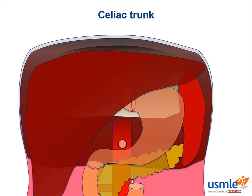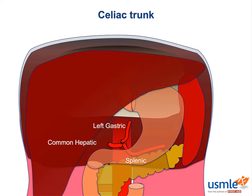The celiac artery is really just a tiny little nubbin that travels for less than a centimeter before dividing up into three major arteries. The left gastric heads towards the esophagus and lesser curvature, the common hepatic heads right towards the liver, duodenum, and head of the pancreas, and the splenic artery heads towards the spleen and body and tail of the pancreas. Each one of these plays a very important role in the blood supply of the stomach.